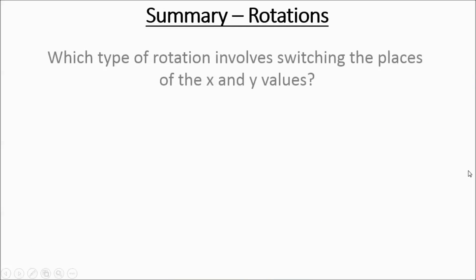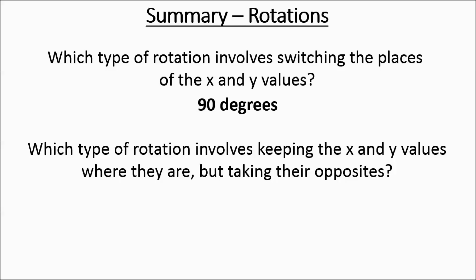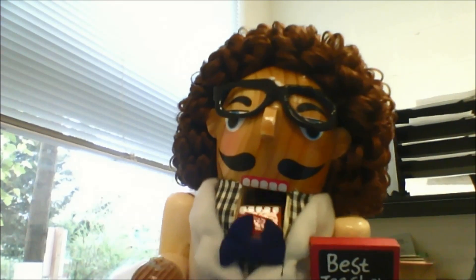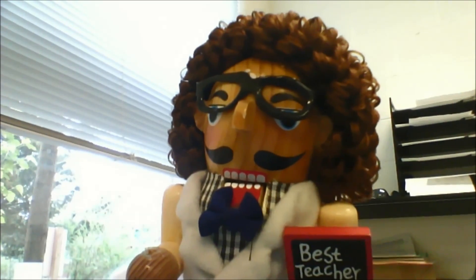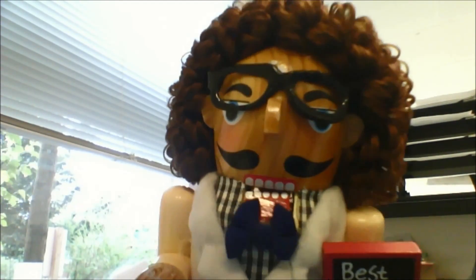For the summary: which type of rotation involves switching x and y, trading places? That's going to be the 90 degrees — whether positive or negative depends on the quadrant it ends up in. What type of rotation involves keeping x and y where they are but taking their opposites? That's the 180 degree rotation. So if you are rotating 180 degrees, the x and y stay where they are but you take their opposites. For 90 degree rotations, trade places with the x and y, figure out the new quadrant, and make your values positive or negative based on that. That's it.